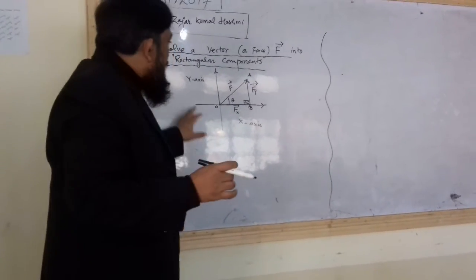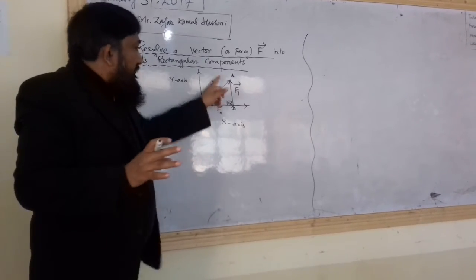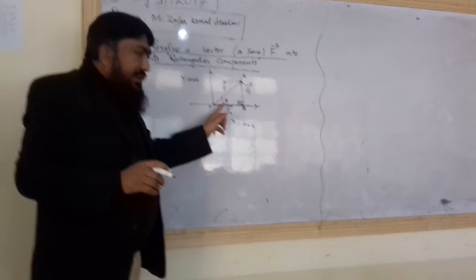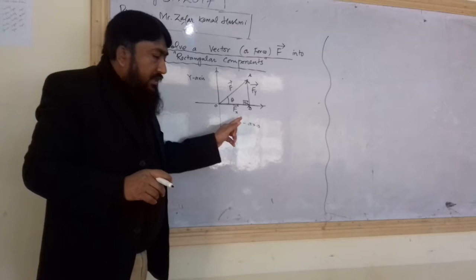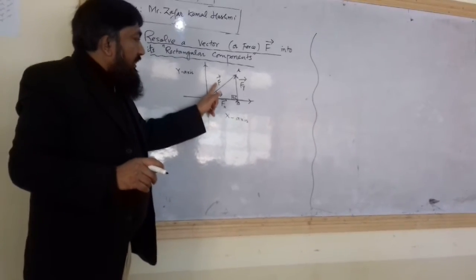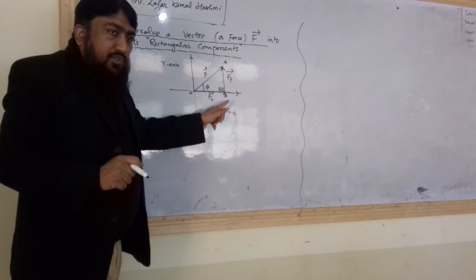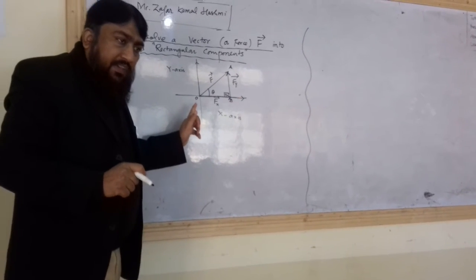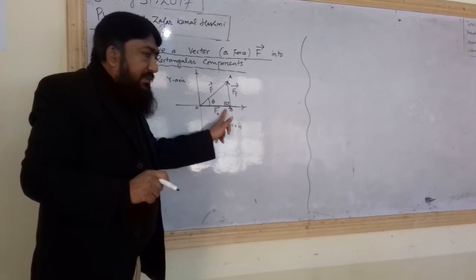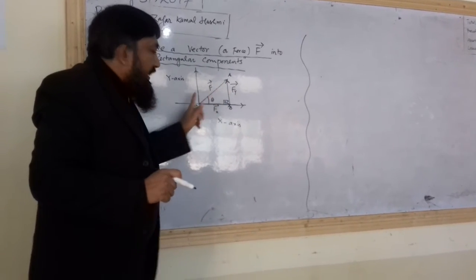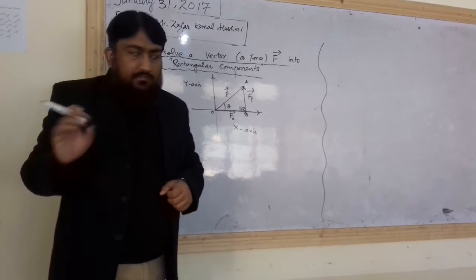So in examination you will write, whatever we said, you will summarize this. We have force of vector F shown by line OA making an angle theta with X axis. In order to resolve vector F or force F into its rectangular component, we draw perpendicular AB on X axis. And considering OB and BA as vector, we see that these have been added by head to tail rule and F is their resultant. Whatever I said, you will write this. Clear? Yes.